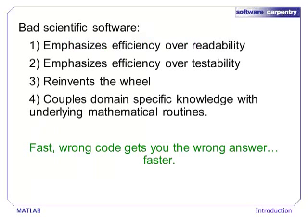Contrast good code with bad code. Bad code is hard for humans to read. It emphasizes small efficiency gains over human readability and testability. Often, it re-implements functions that have already been written and tested by someone else. Also, it can be hard to find the domain-specific algorithm among all of the low-level, secondary routines.